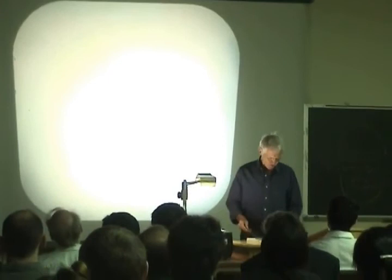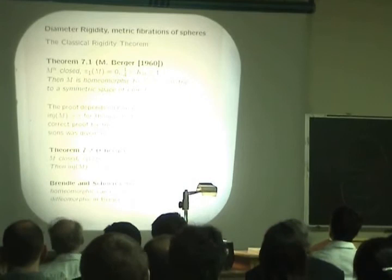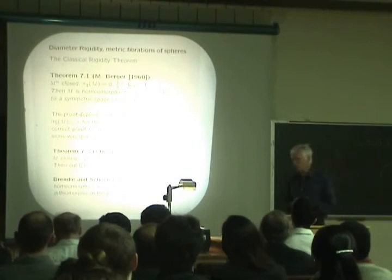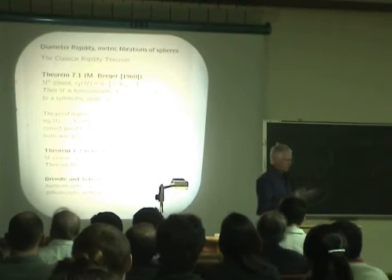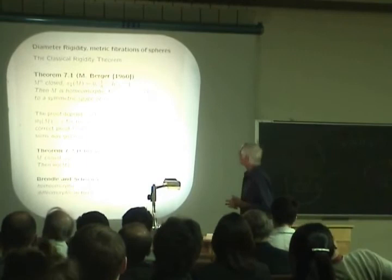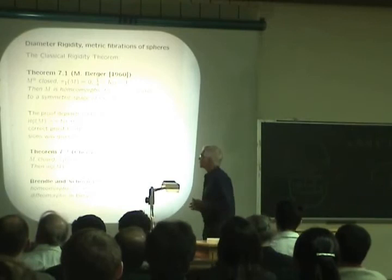Okay, so this brings me to the diameter rigidity theorem of Berger. The original sphere theorem was quarter-pinched, that is, strictly quarter-pinched. What happens if you allow sectional curvature to actually have the value of one-quarter? Well, it's well known that there are examples where that happens which are not spheres, namely the rank-one symmetric spaces, the projective spaces over the complex, quaternionic fields, and also the Cayley projective plane. Berger proved in 1960 that if you have a compact simply-connected manifold which is weakly one-quarter pinched, then it's either homeomorphic to a sphere or isometric to a symmetric space from that list.